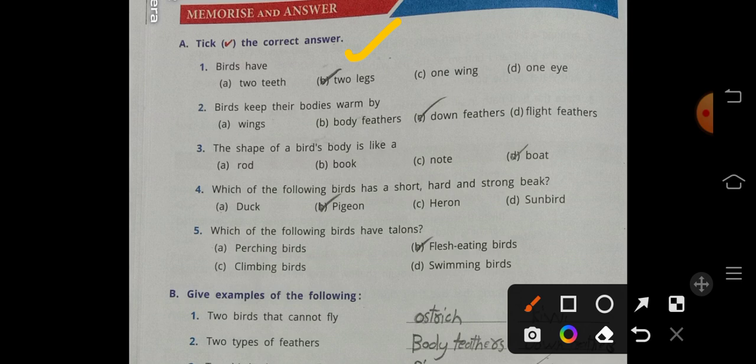Birds have two legs. Birds keep their bodies warm by down feathers. As you know, there are three types of feathers: body feathers, down feathers, and flight feathers. Down feathers keep them warm. The shape of a bird's body is like a boat.